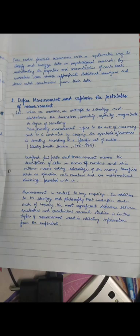So these scales provide researchers with a systematic way to classify and analyze data in psychological research. By understanding the properties and characteristics of each scale, researchers can choose appropriate statistical analysis and draw valid conclusions from their data. Yeh scales researchers ko ek systematic tariqa provide karte hain to classify and analyze the data in psychological research. While using this scale, you can systematically classify data and analyze it in psychological research. And by understanding properties and characteristics of each scale that we have just talked about, researchers can choose appropriate statistical analysis and conclusions draw kar sakte hain from the data.